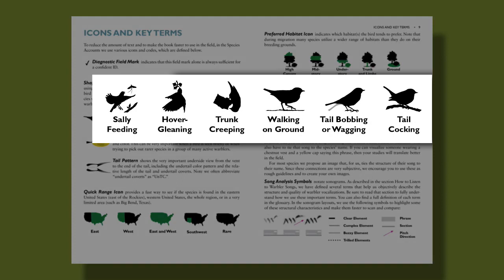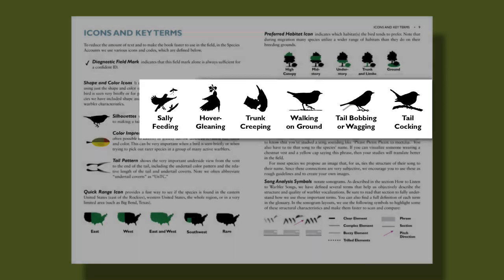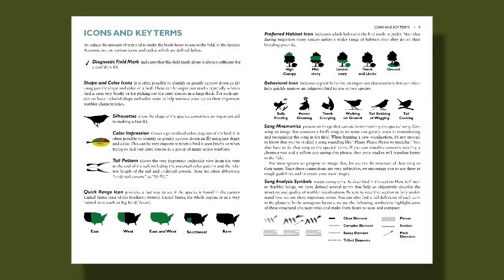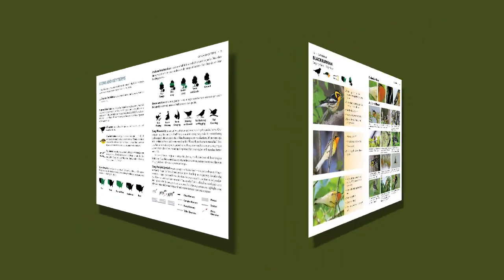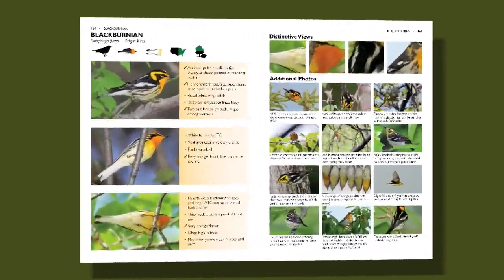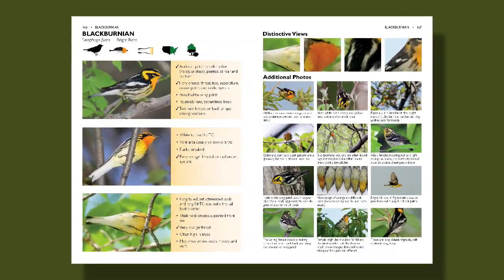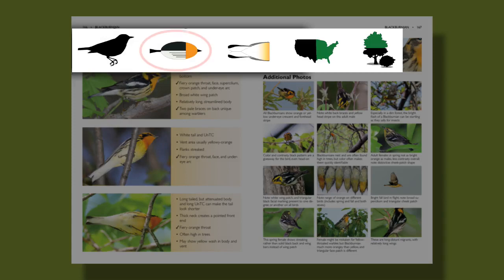For example, if the bird chronically pumps its tail or if it creeps along a tree trunk. Another useful icon is the color impression icon, which gives you a general map of the bird's color pattern, and this can be especially useful when you only get a quick or partial glance of a warbler.